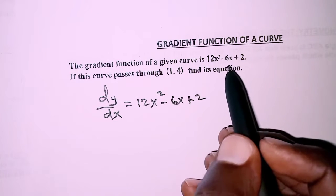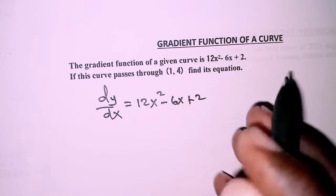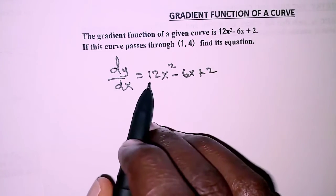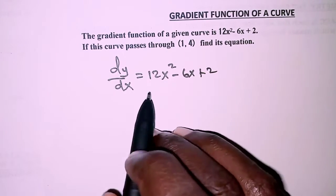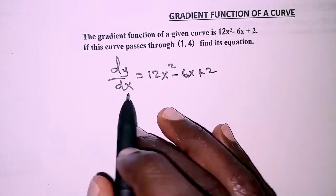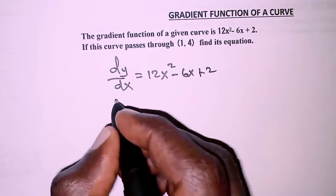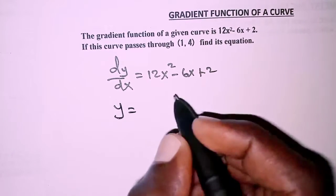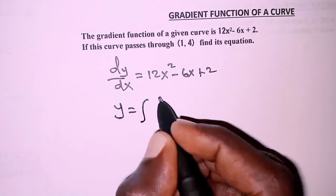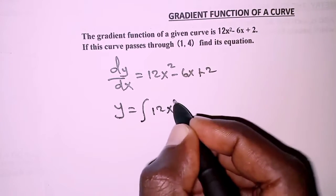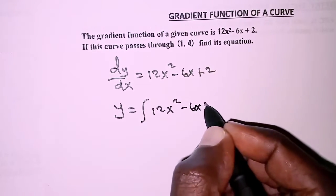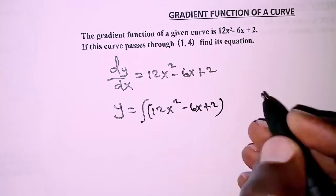For us to get the equation of the curve, we are simply going to integrate the gradient function with respect to x. So that means y equals the integral of 12x² - 6x + 2 with respect to x.